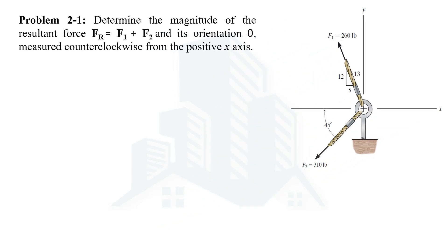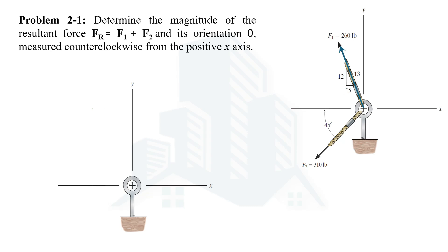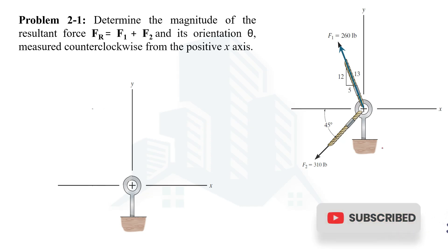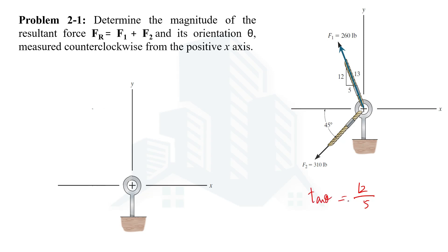Let's consider this hook on which two forces are acting. The first force has a magnitude of 260 pounds and acts at a certain angle. We are not given the angle directly, but a right triangle is provided. In this right triangle, the perpendicular is 12 and the base is 5, so we can use the tan-theta formula to determine the angle.